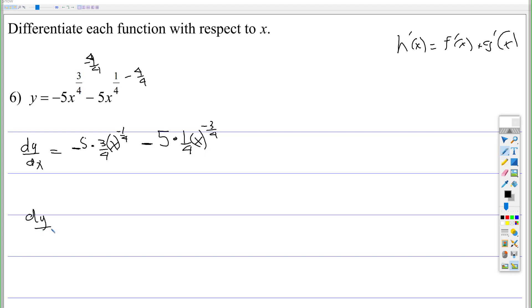So when you simplify that, this is negative 5 times 3 fourths, so that's negative 15 fourths, and then the x to the negative 1 fourth comes down to x to the positive 1 fourth, or you could write it like this, negative 15 fourths times the fourth root of x, alright?